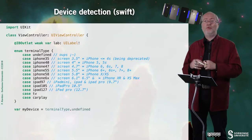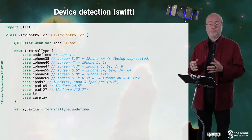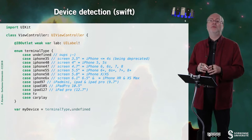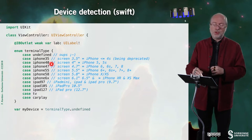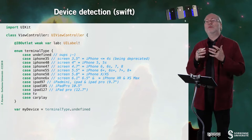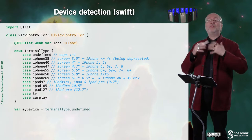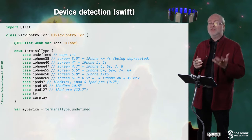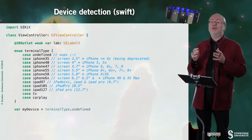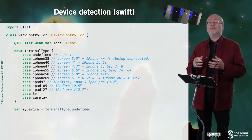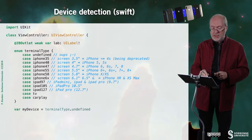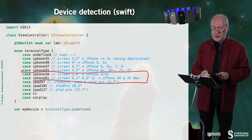Here I present a typical code example for device detection in Swift — it's quite easy to transform into Objective-C. First, I strongly suggest having an enumeration type that lists the possible devices you can detect. As you can see, I'm not focused on the exact device model but rather on the screen size.